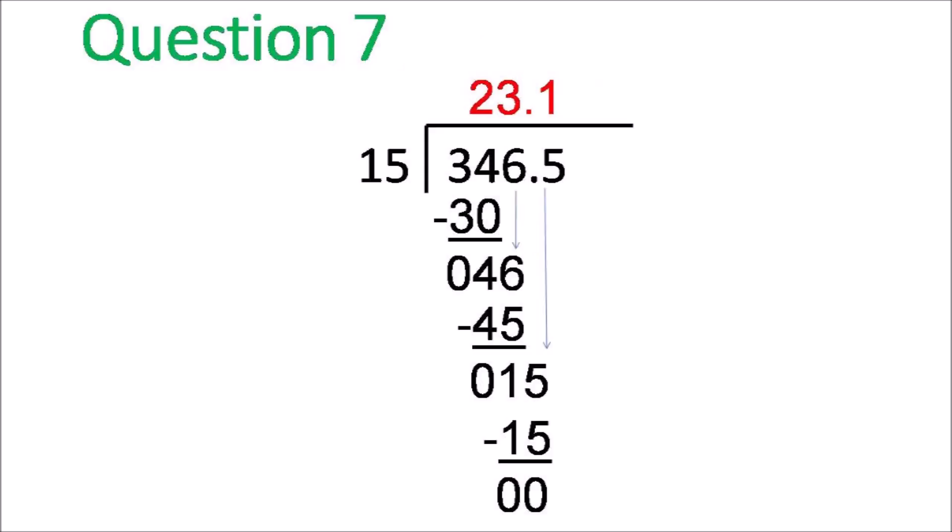Question number 7. 346.5 divided by 15. You divide 15 into 34, goes twice. You get 30. You put the remainder down, 4. Bring down the 6, then 46 three times. You get a remainder of 1. Bring down the 5, and then the 15 goes once. So 23.1 final answer.